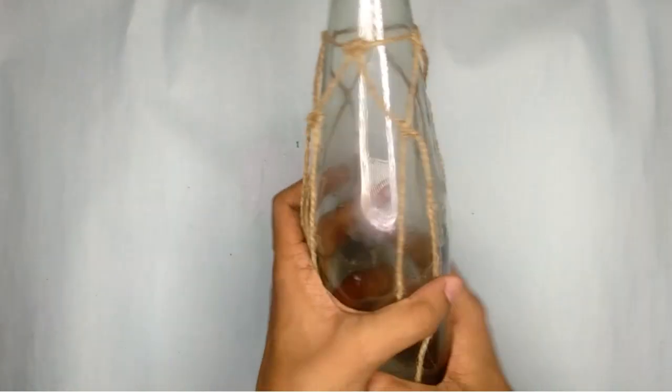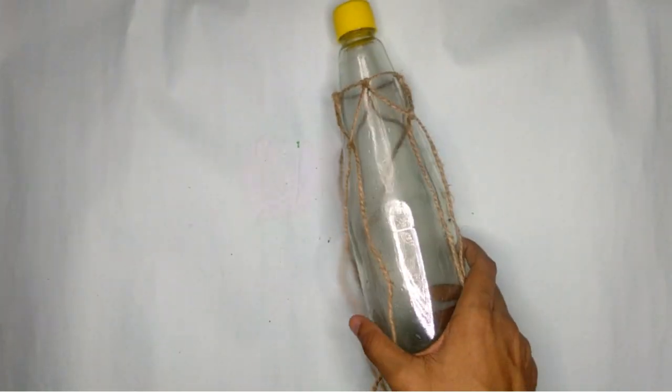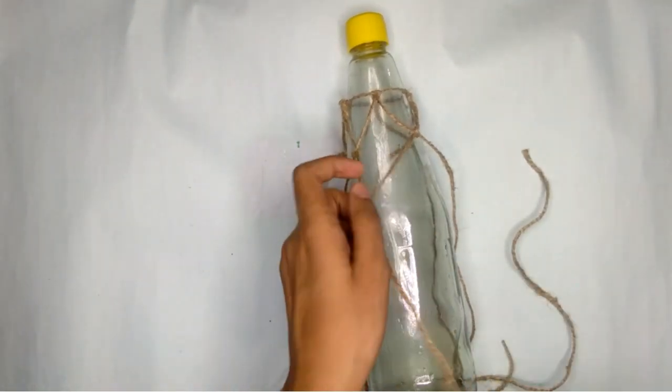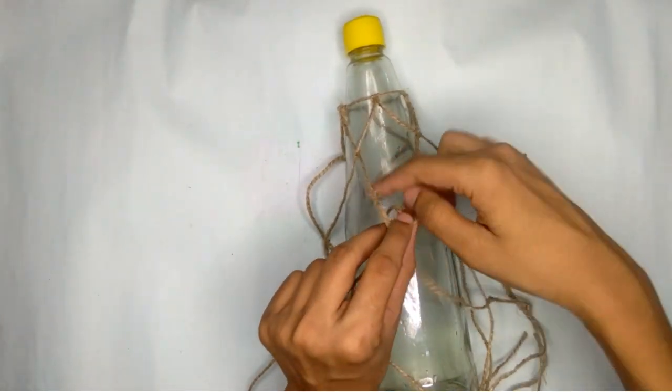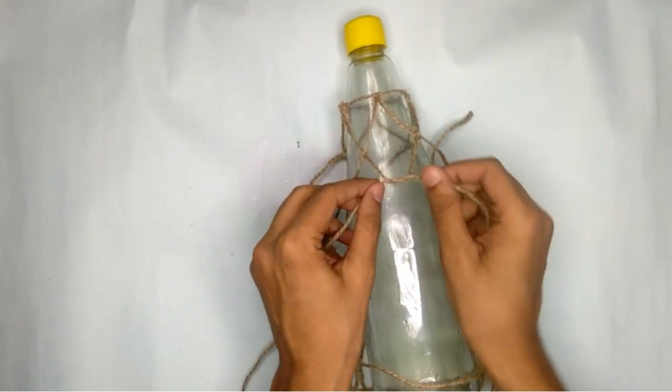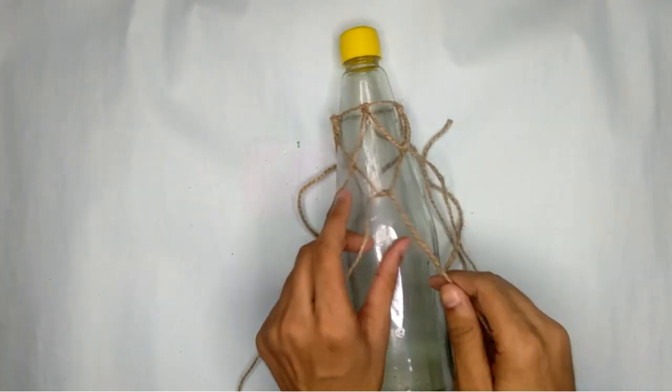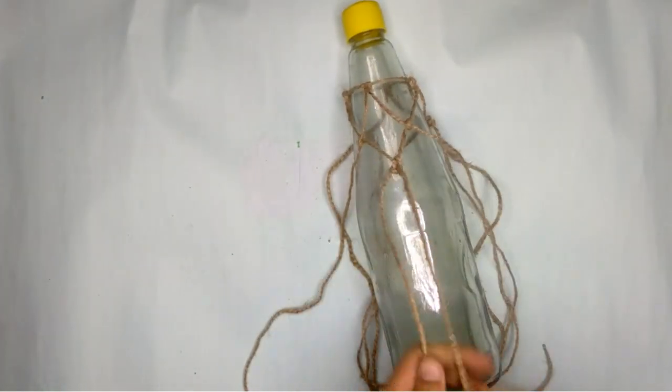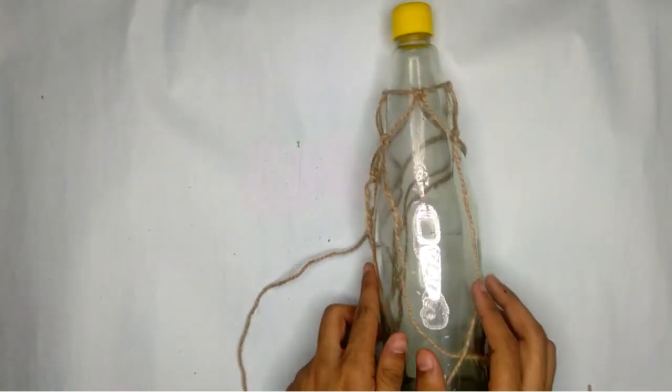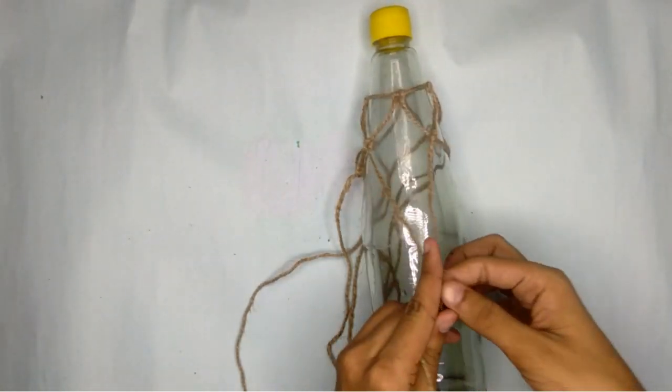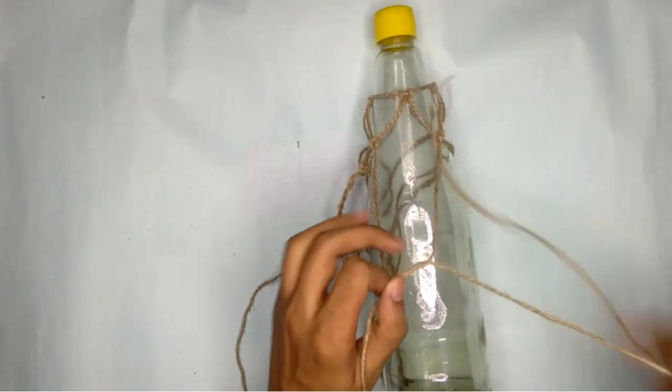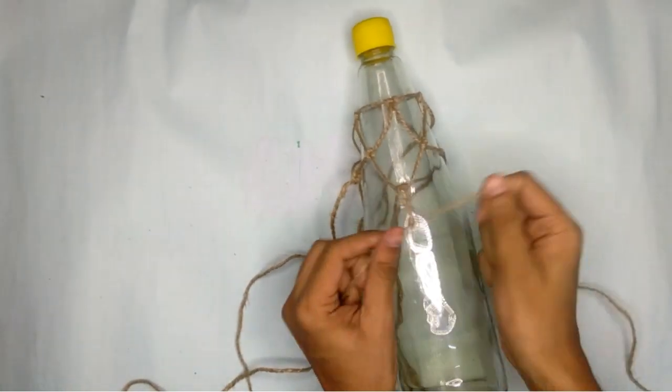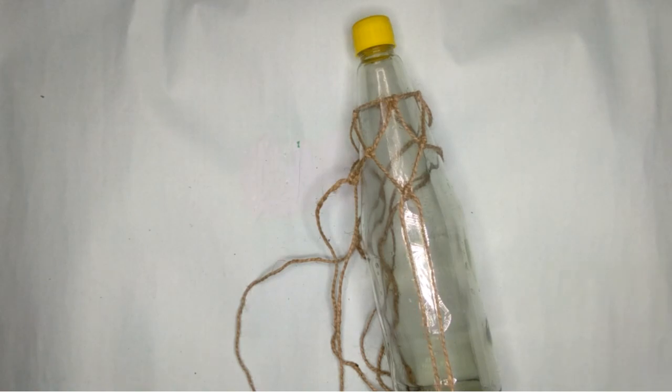And our first layer is ready. Look how pretty it looks. For the second layer, we are going to repeat the same process, but we are going to take the new corners. This will result in forming a diamond shape, and then we will follow the same process all over the bottle.